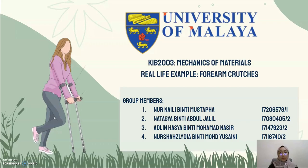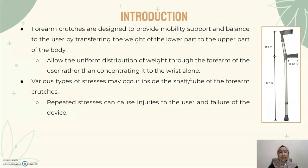Hello and good afternoon. We are from group 1 and today we are going to present the example for KIB users, row 3, which is regarding the demonstration of PLO through the example of forearm crutches. Forearm crutches are designed to provide mobility, support, and balance to the user by transferring the weight from the lower part to the upper part to support it.